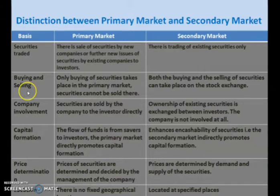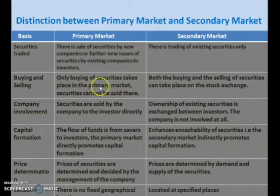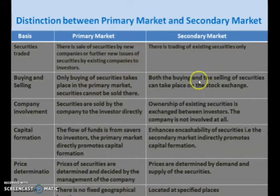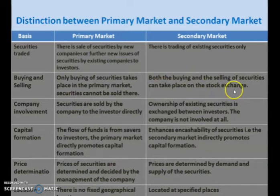Now, buying and selling: only buying of securities takes place in the primary market. Securities cannot be sold here. Primary market is a place where only buying of securities takes place. For selling this security, we have to go to the secondary market. So both the buying and selling of securities can take place on the stock exchange.